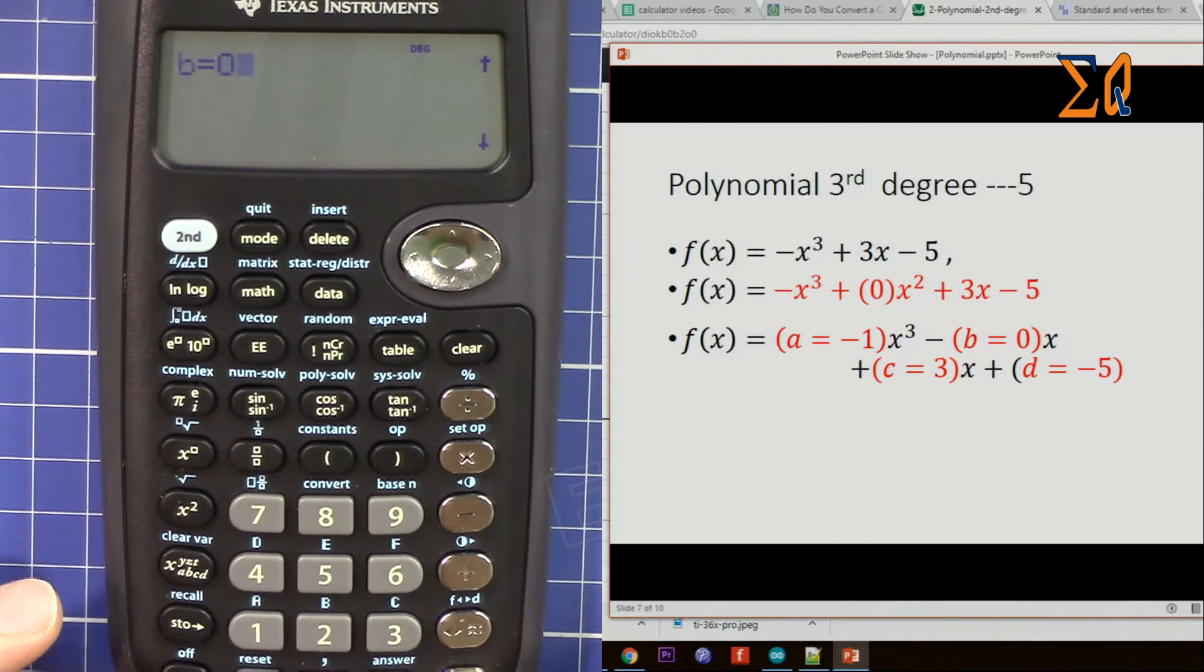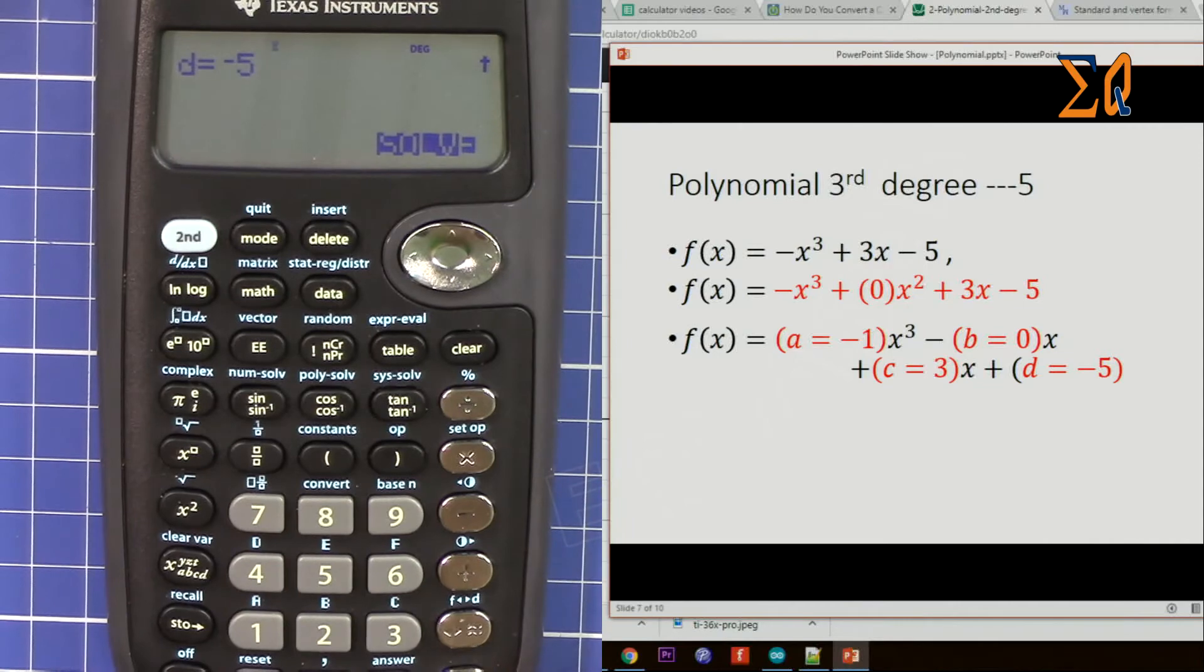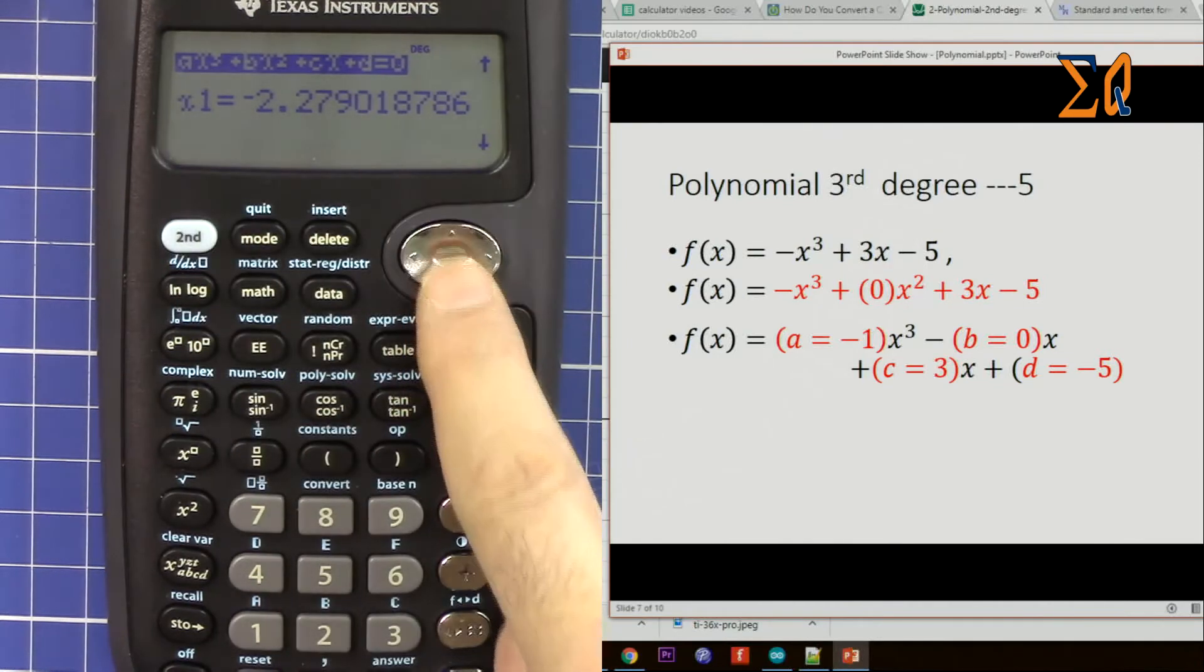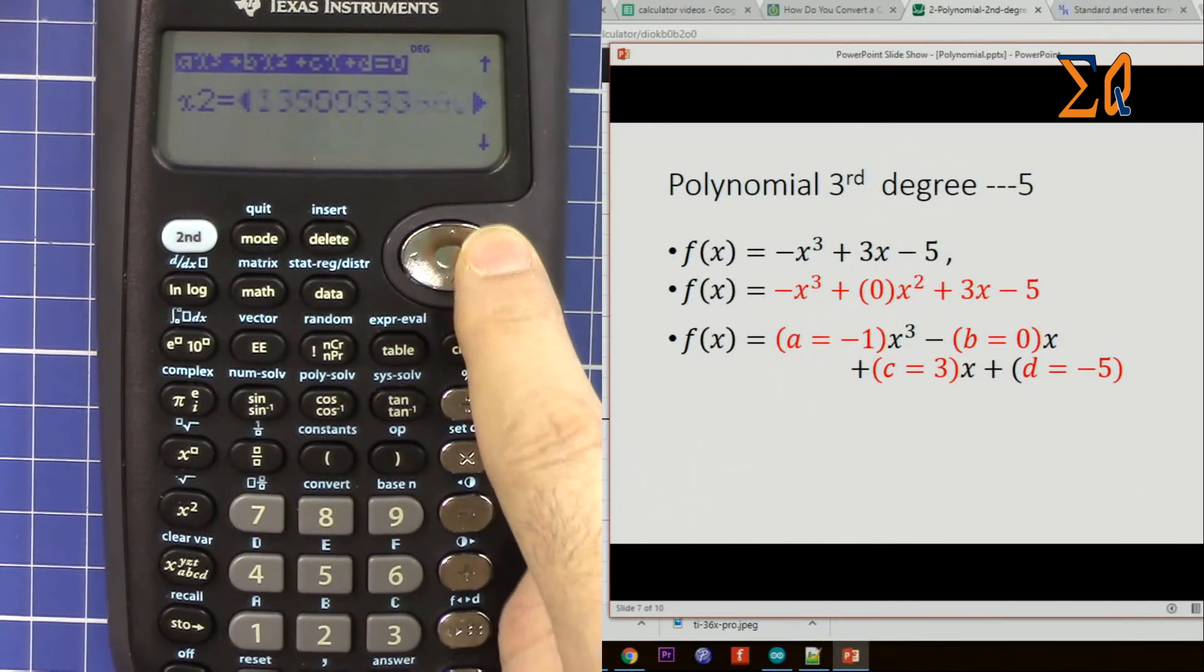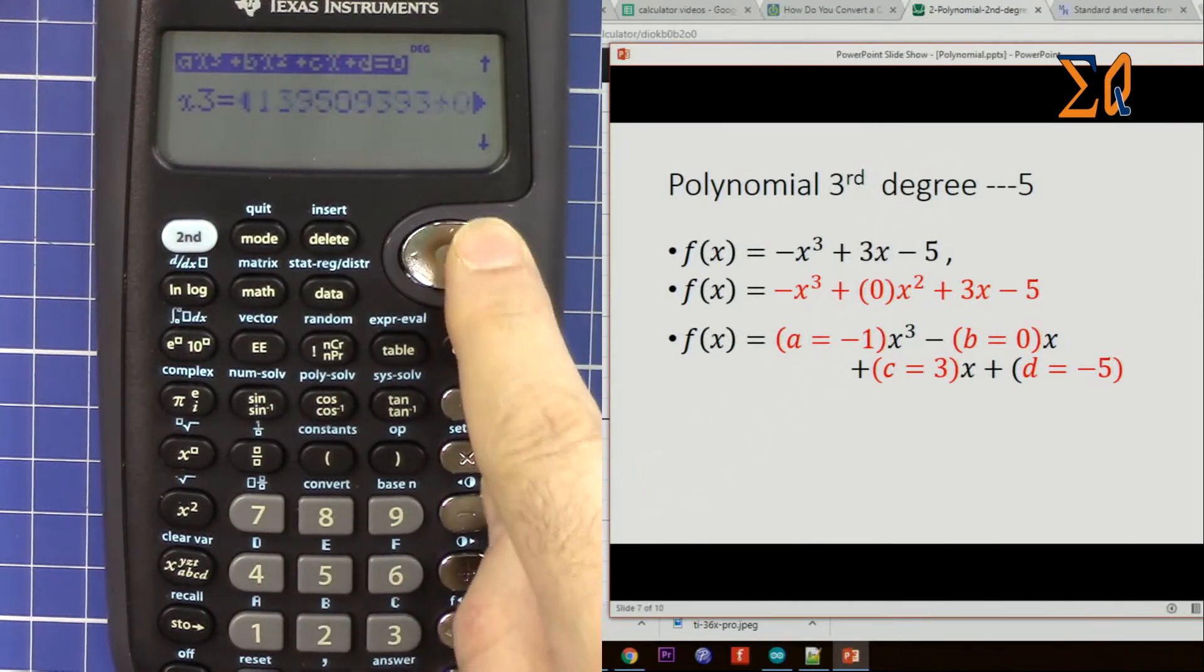C is 3, and d is -5. Now this is my x1. This is my x2, and you see the arrow shows here minus, so it means we have an imaginary part. So the answer is complex or imaginary. We have for x3 as well.